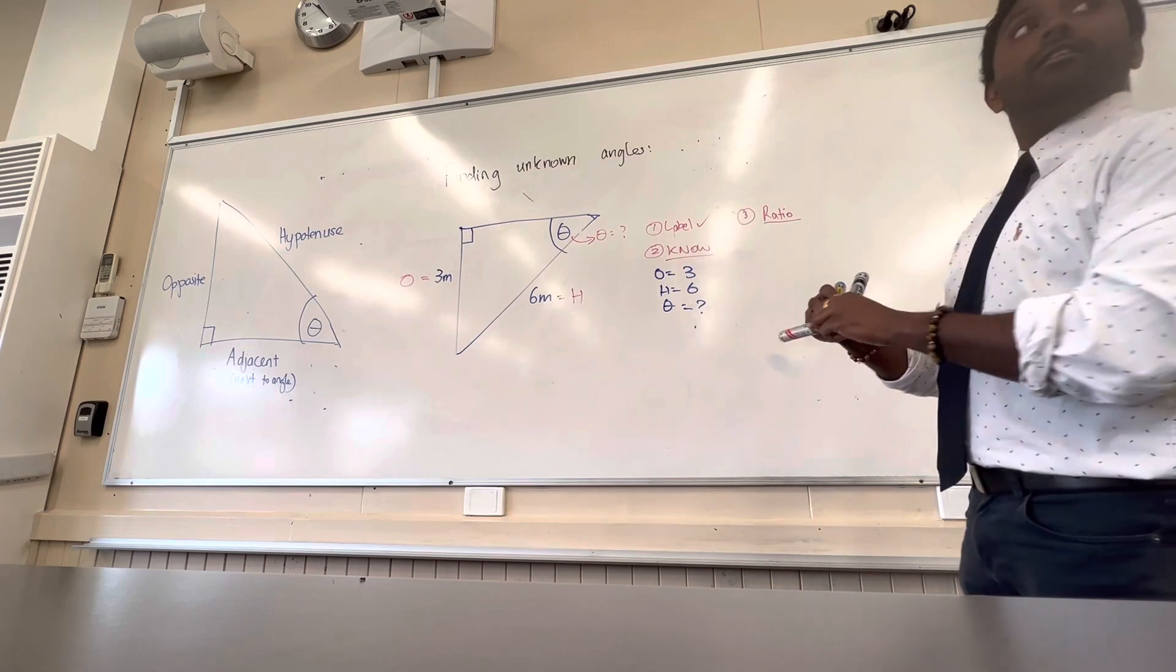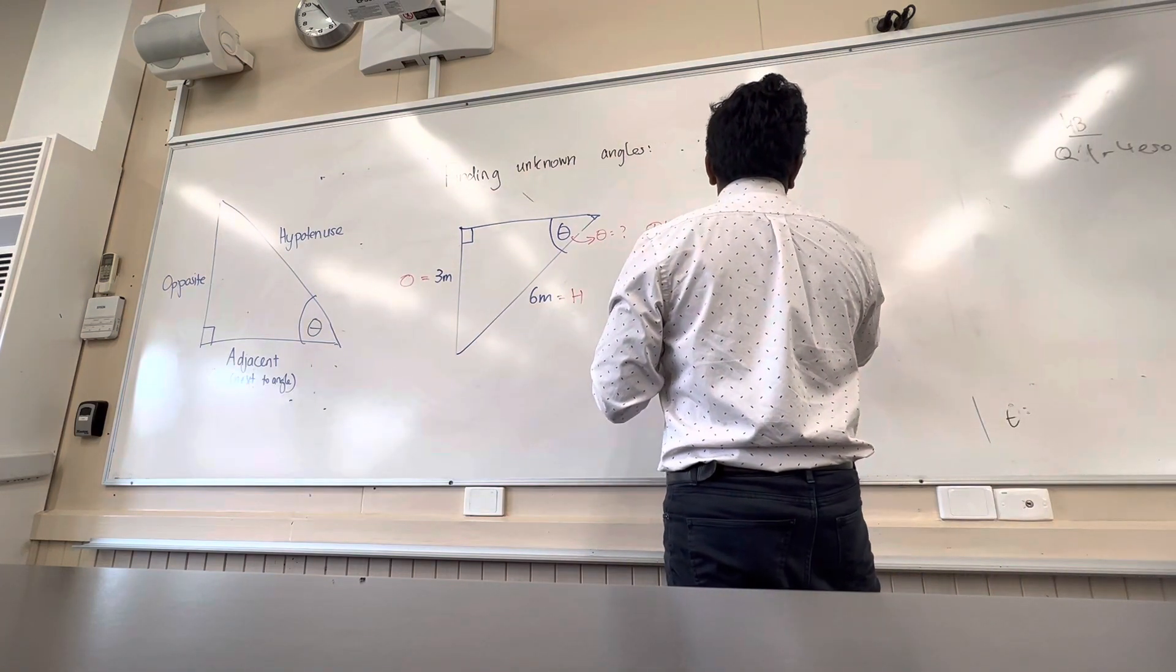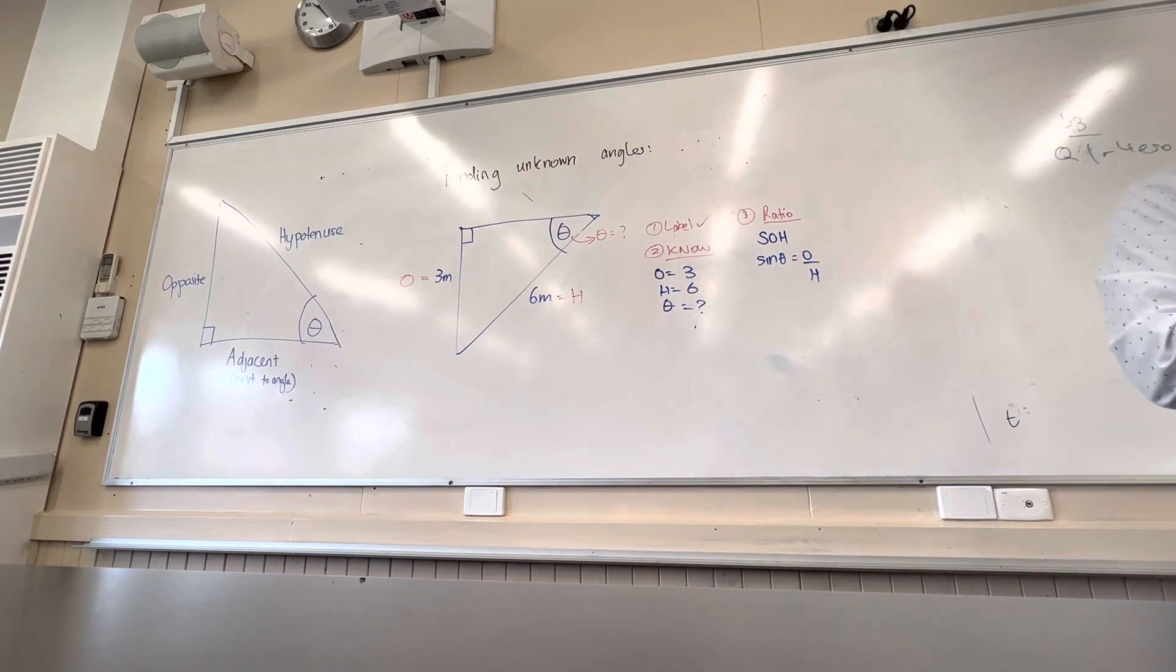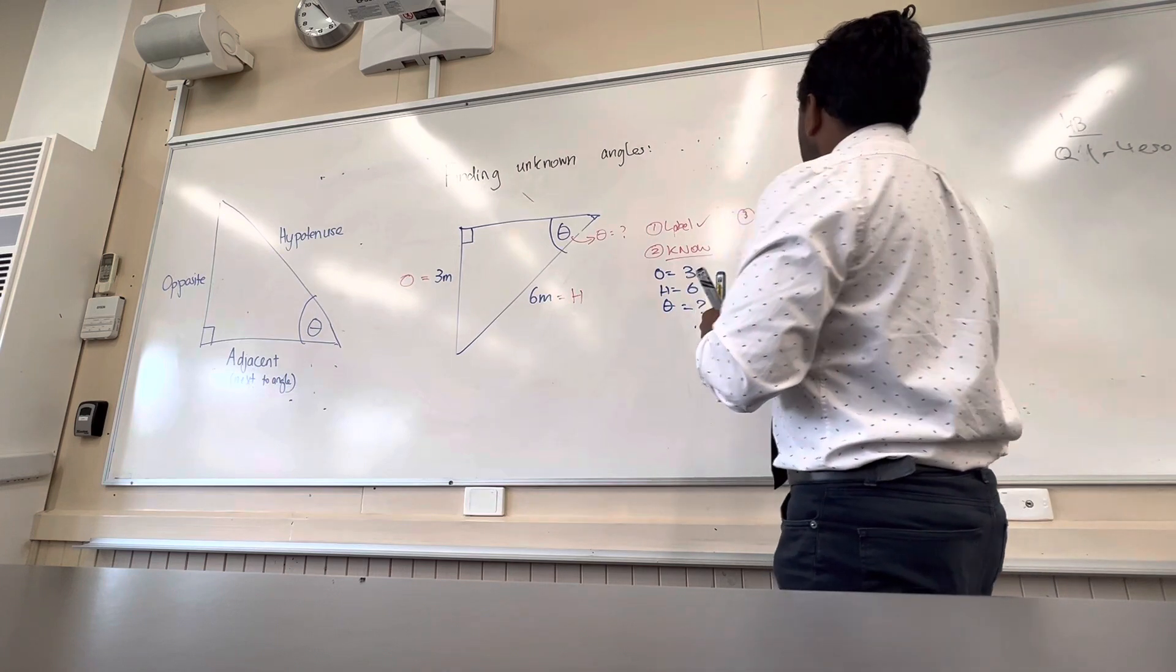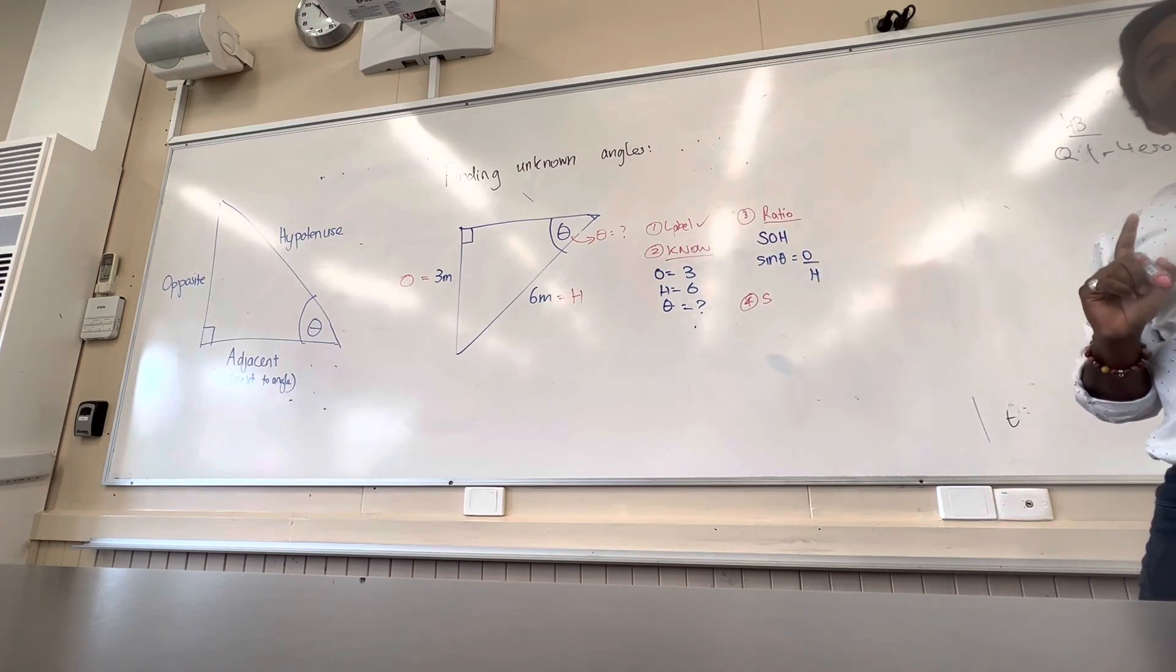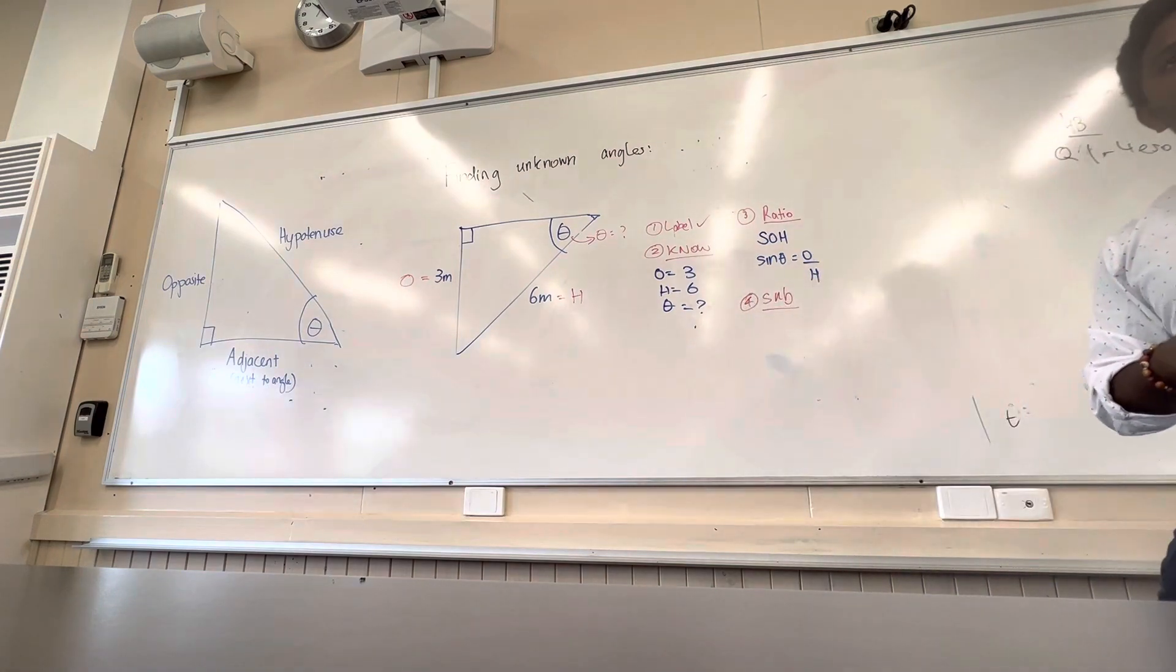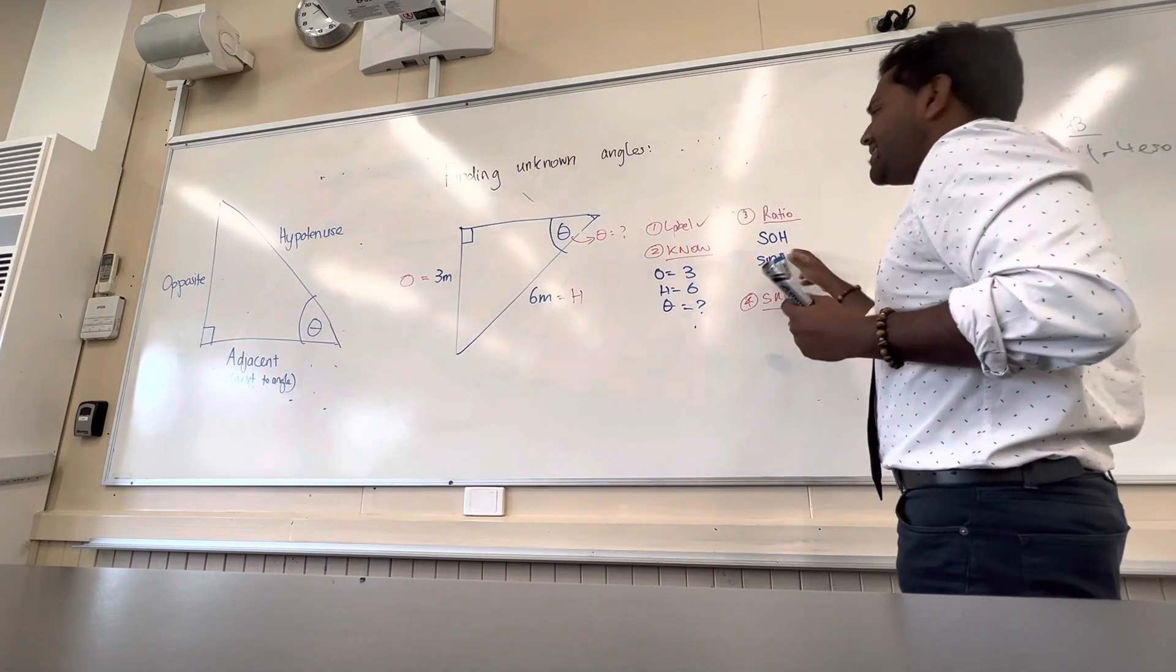So the trig ratio here, Arjun, is what? Sine, sine, well done. Which is sine theta equals O over H. Brilliant. What's the fourth step going to be after this, Archer? Yeah, we've written the equation, what's the next step? Substitute. What are you going to substitute?